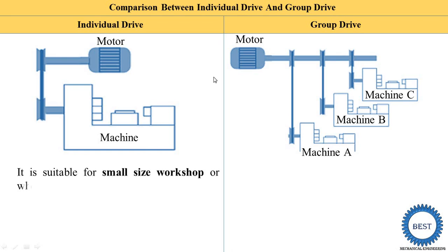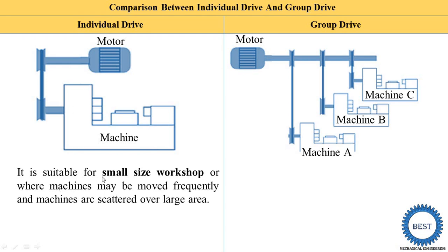Now we understand the comparisons. Individual drive is suitable for small size workshops, or where machines may be moved frequently, and where machines are scattered over a larger area. The first condition: individual drive is used for a small size workshop where less number of machines are there. Second condition: where machines are moved frequently from one place to another, individual drive is suitable.